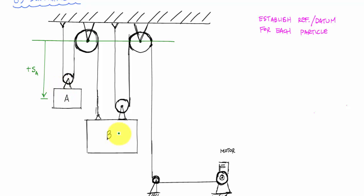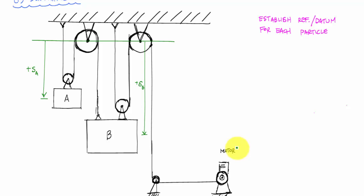For particle B, I'll use the same reference line, and the vertical distance from this datum to particle B is s_B. I'll define any vertical distance moving away from the datum as positive. For the motor, even though it's stationary, a point on the cable represents its motion. I'll let the movement of that point represent what the motor is doing.